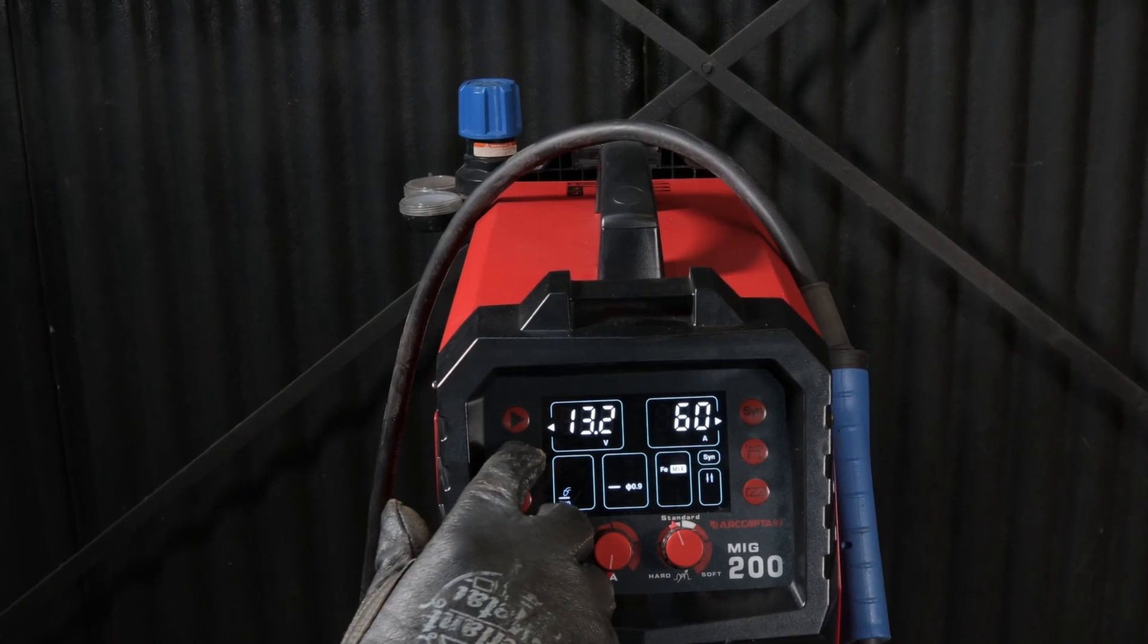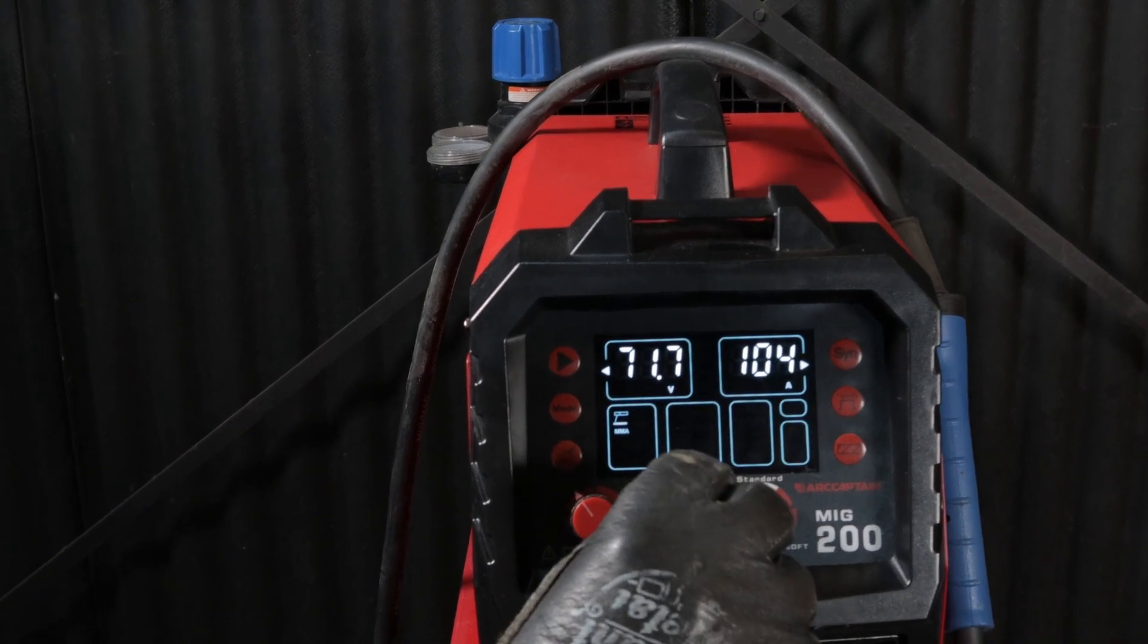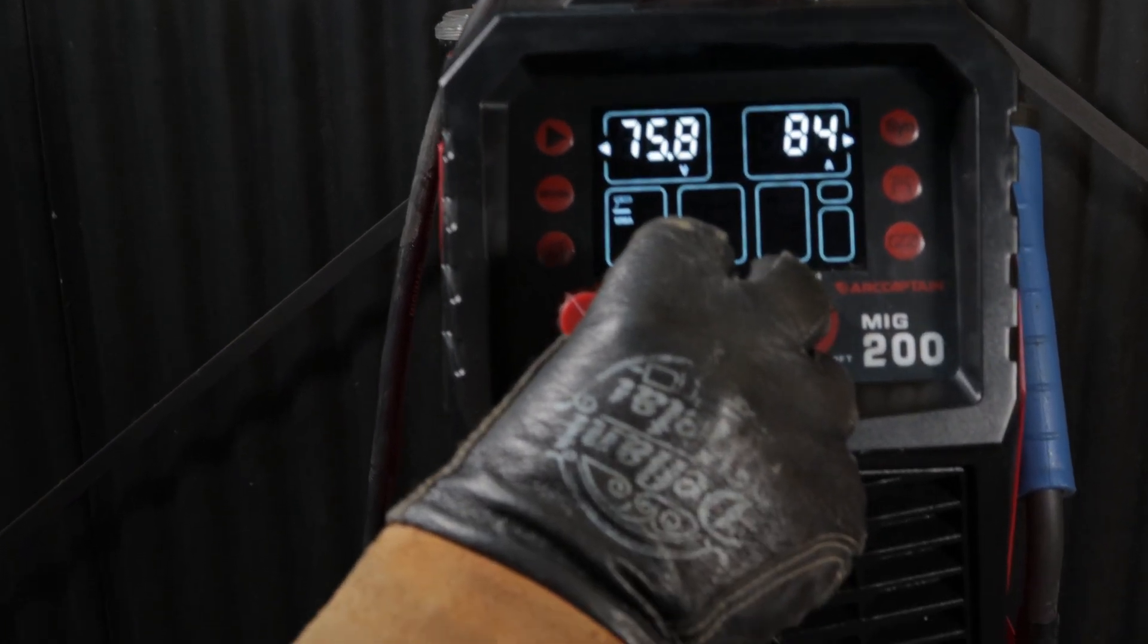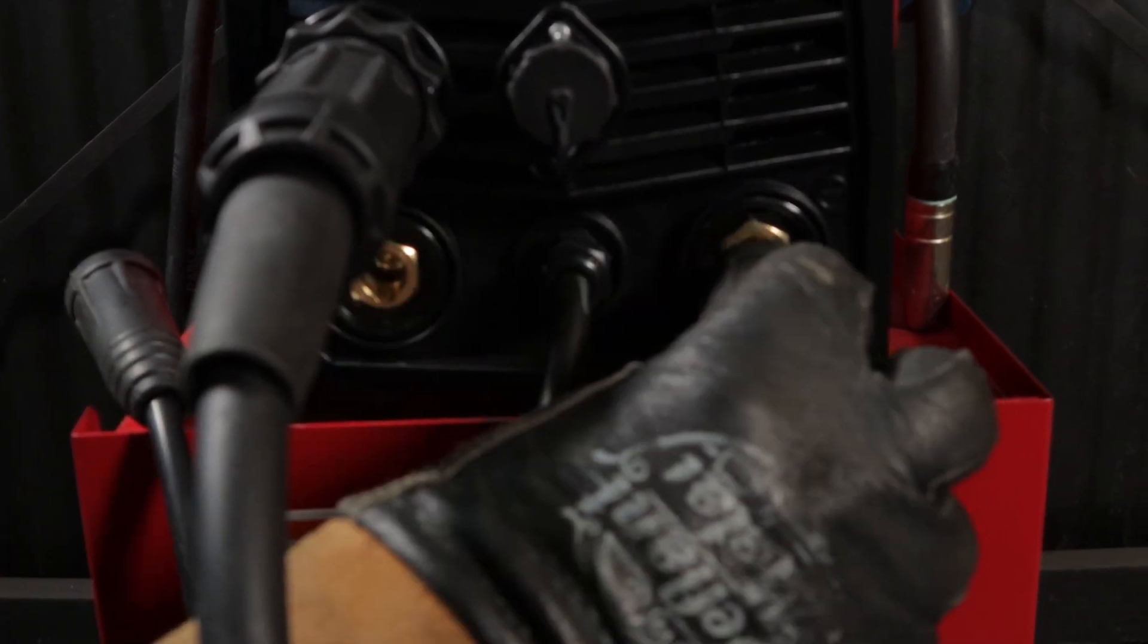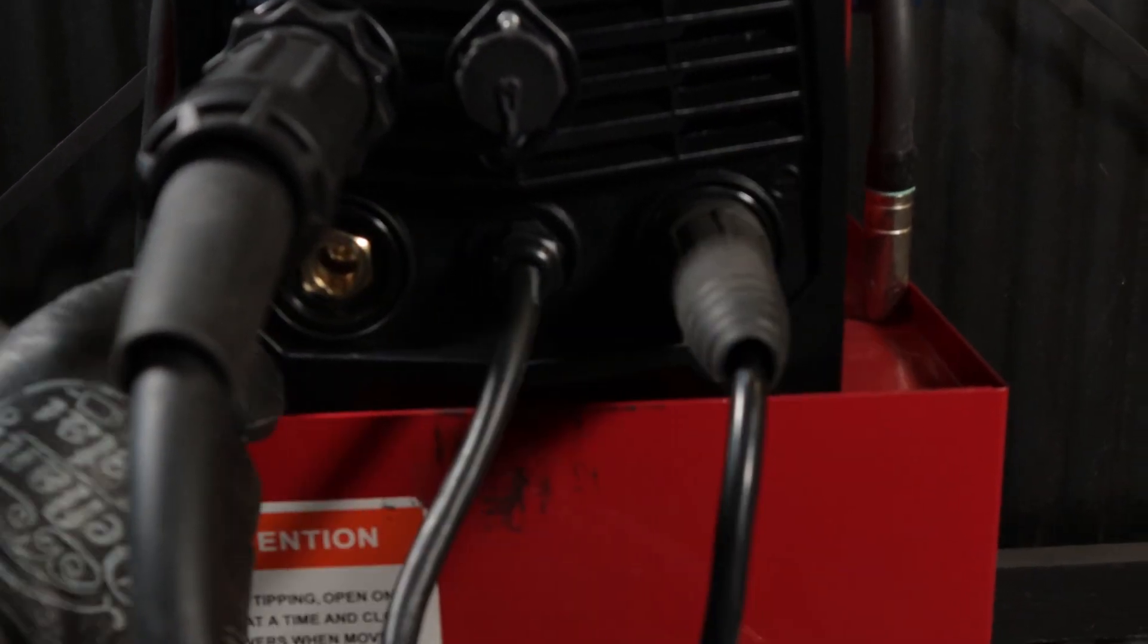To select stick, cycle through to MMA. Disconnect the pigtail. I have the ground in the negative connector and the stinger in the positive. I set the machine to 85 amps and connect the earth.